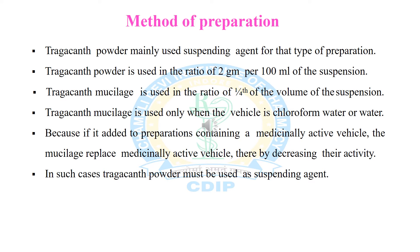The concentration of tragacanth required in the formulation is 2 grams per 100 ml of suspension. Tragacanth mucilage is used in the ratio of one-fourth of the volume of the suspension. Tragacanth mucilage is used when the vehicle is chloroform water, because if tragacanth mucilage is added to a medicinally active vehicle, the mucilage replaces the medicinally active vehicle, thereby decreasing its therapeutic activity. In such cases, tragacanth powder must be used as the suspending agent.